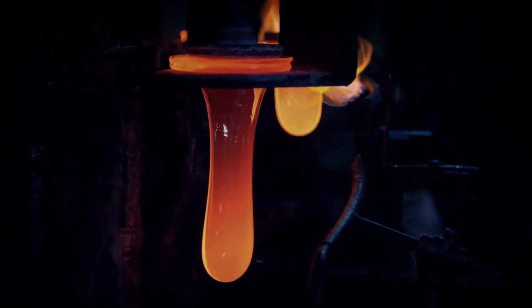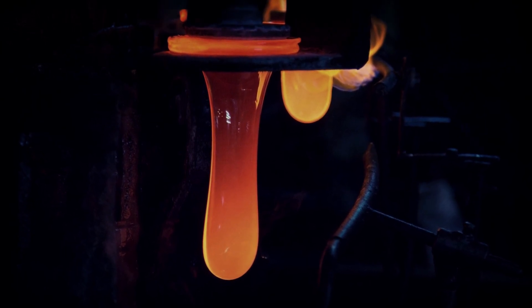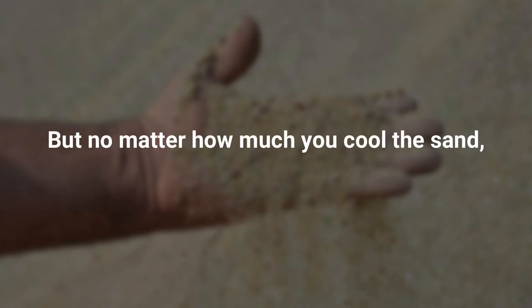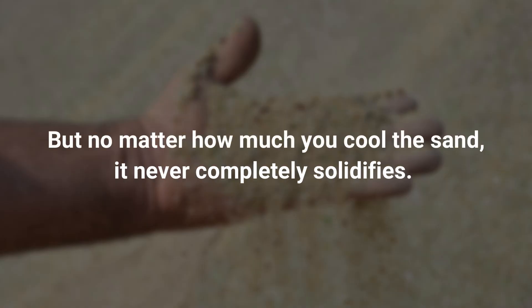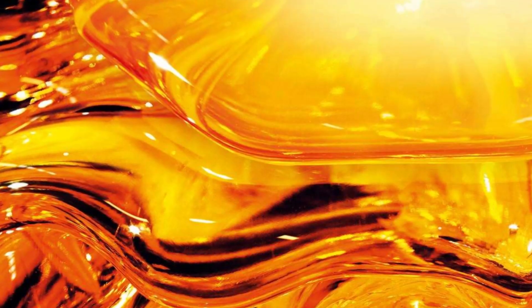It undergoes a complete transformation and acquires an entirely new inner structure. But no matter how much you cool the sand, it never completely solidifies. Instead, it condenses into a frozen liquid, or what materials scientists call an amorphous solid — a hybrid of a solid and a liquid, with some of the solid's crystalline order and some of the liquid's molecular randomness.